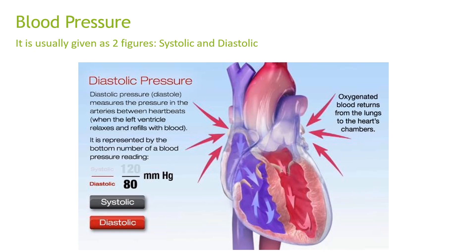Diastolic pressure measures the pressure in the arteries between heartbeats when the left ventricle relaxes and refills with blood. It is represented by the bottom number of the reading, for instance 80 mmHg, and oxygenated blood returns from the lungs to the heart's chamber.